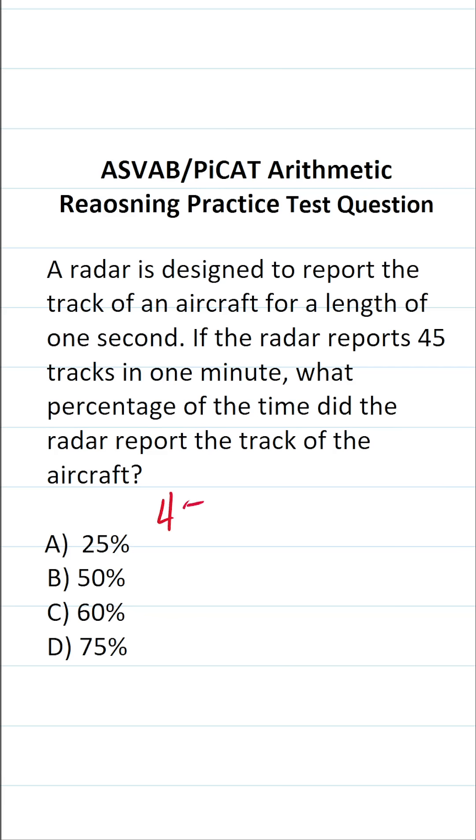So it made 45 one-second reports, so it made 45 seconds of reports in total out of a period of one minute. So for this one, you have to know that there are 60 seconds in one minute. So this becomes 45 out of 60.